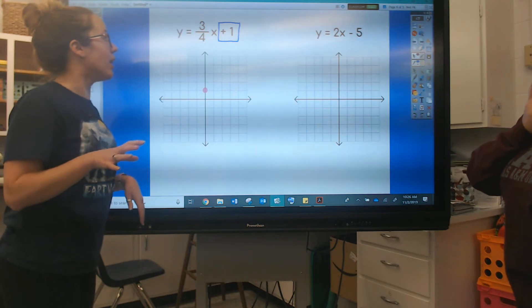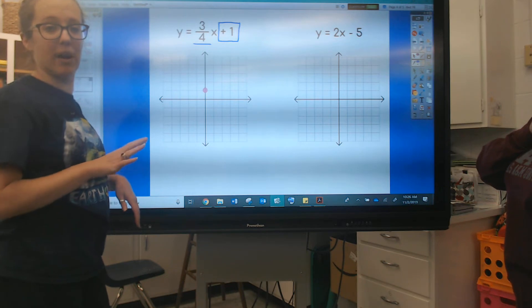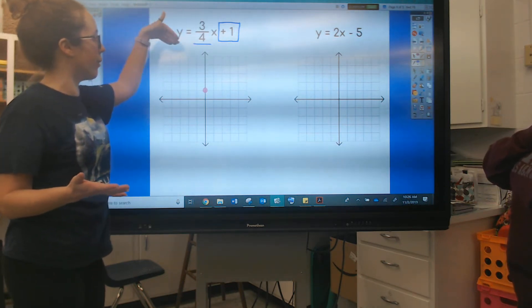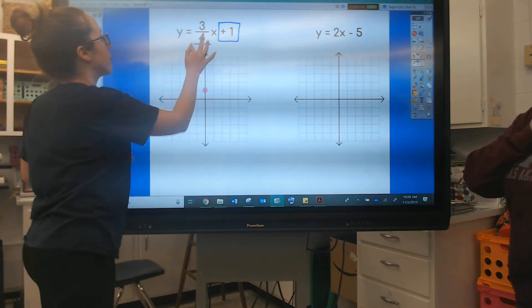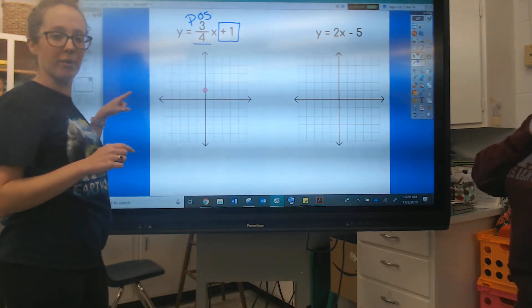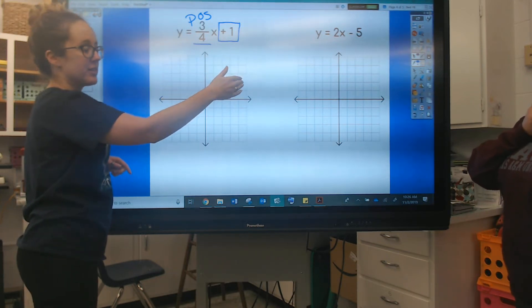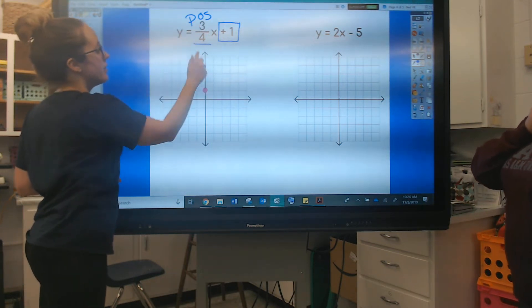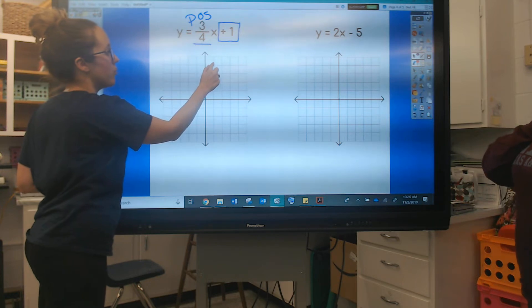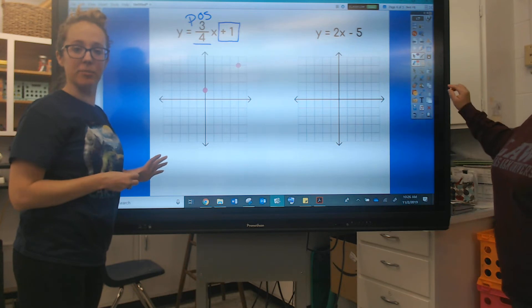All right, then we're going to take our slope, which is already a fraction, so we don't have to do any extra work. We just have to decide if it's positive or negative. So it says three-fourths, this is a positive slope. I'm going to write positive. If you remember from the little notes I wrote over here on the last slide, that means I'm going to count up and then count to the right. So we're going to count up one, two, three, and then count to the right one, two, three, four. And that's where my second point is going to go.